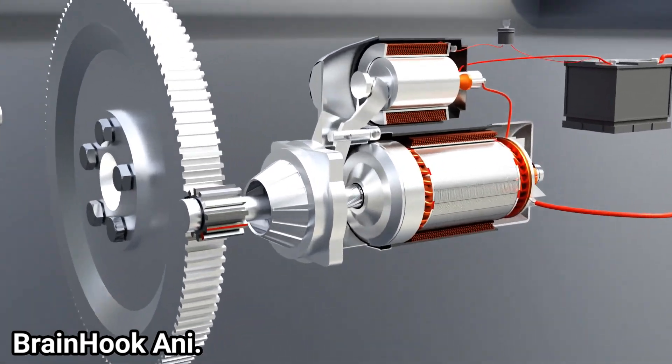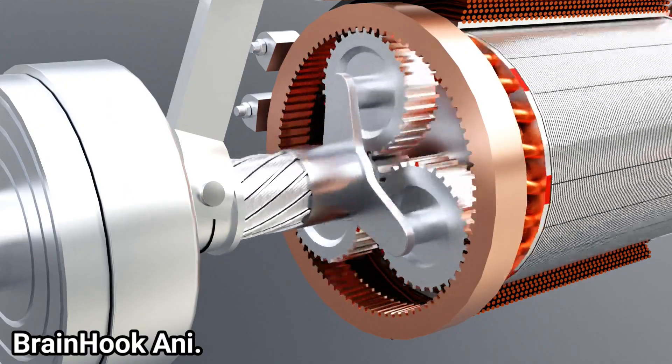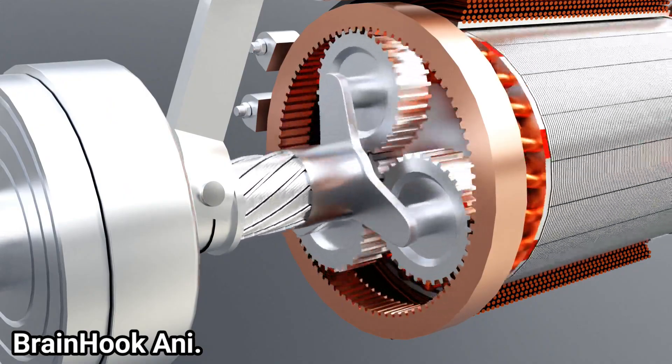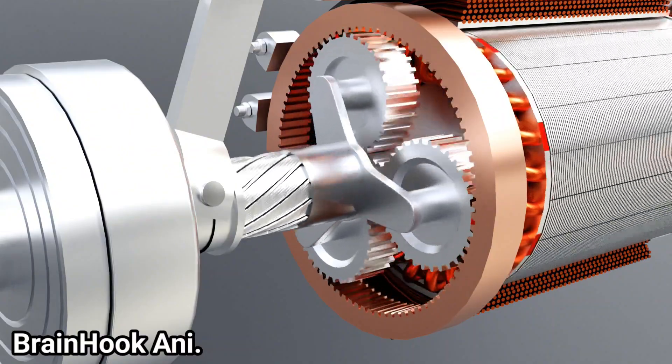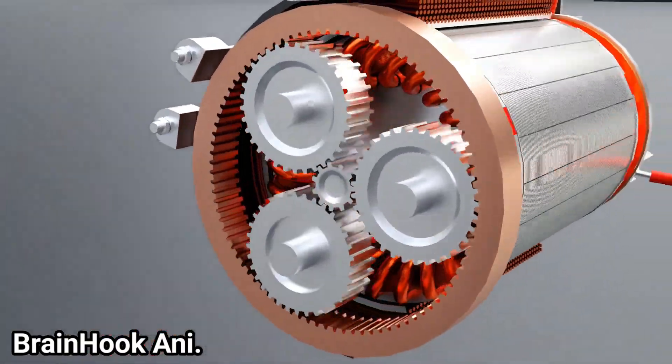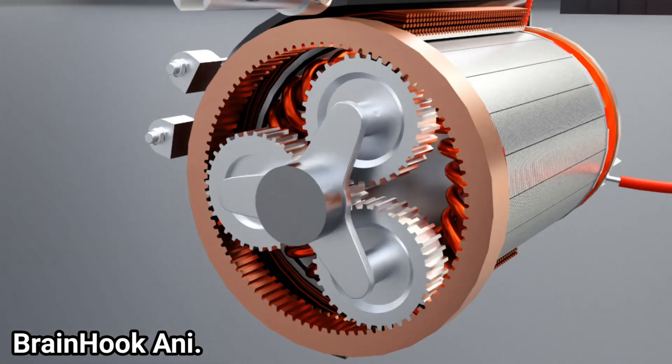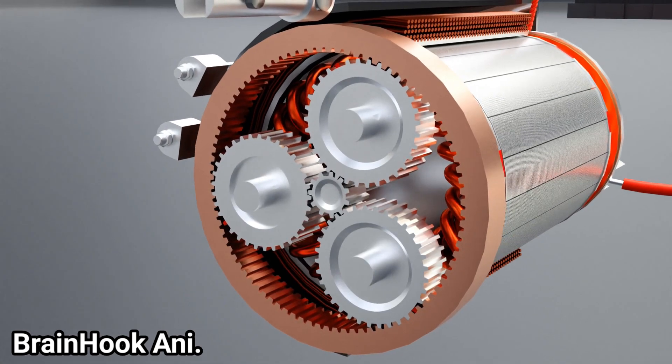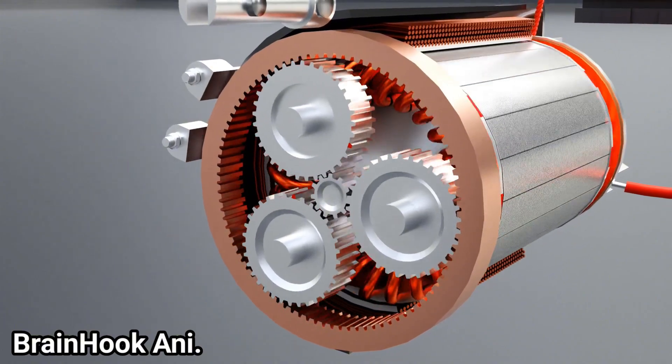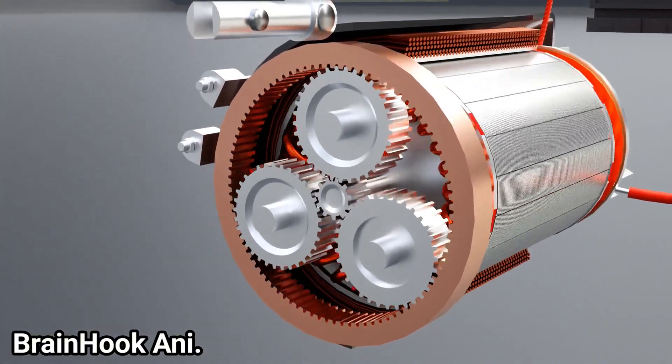So, a planetary gear set is installed to further increase the torque. With low weight and small space, planetary gears are incredibly efficient for a large gear reduction. Its gear ratio is 9 to 1. This is sun gear, ring gear, planetary gear set, and this is a carrier. The sun gear is the input gear, the ring gear remains stationary, and the output is the carrier made up of 3 planetary gears.